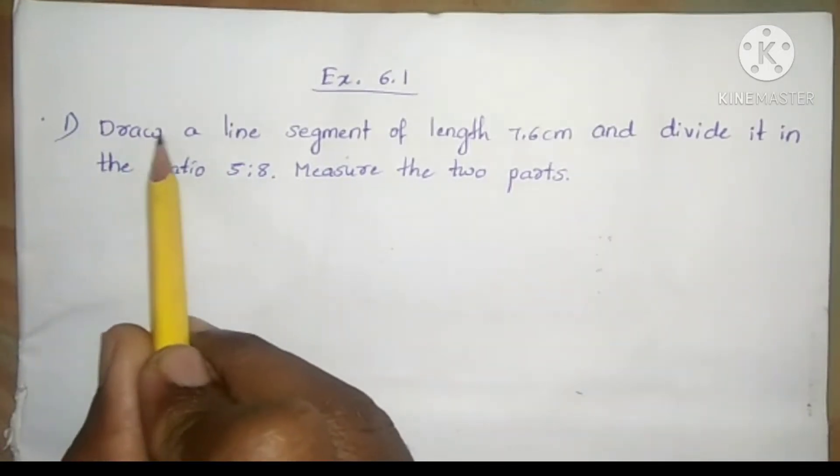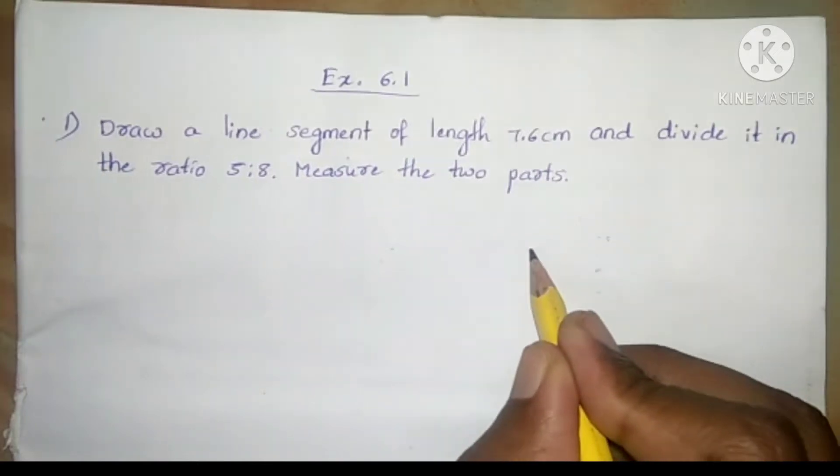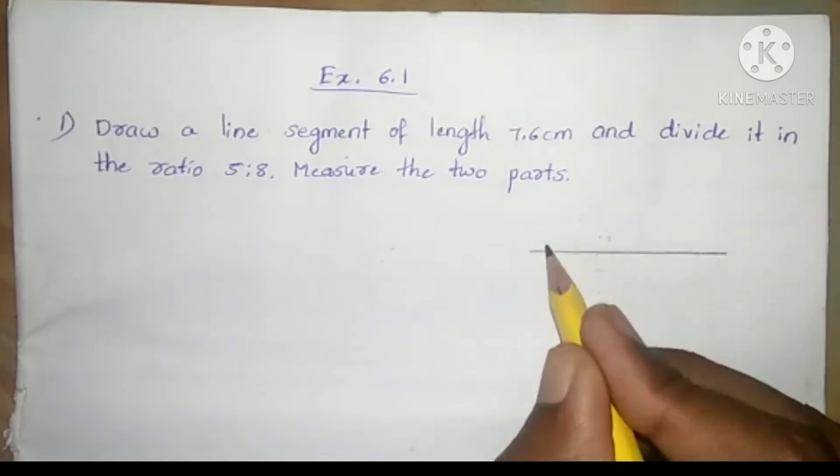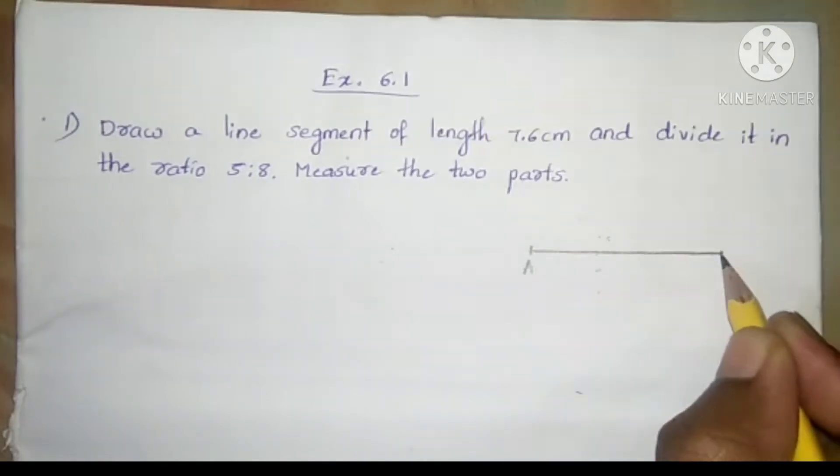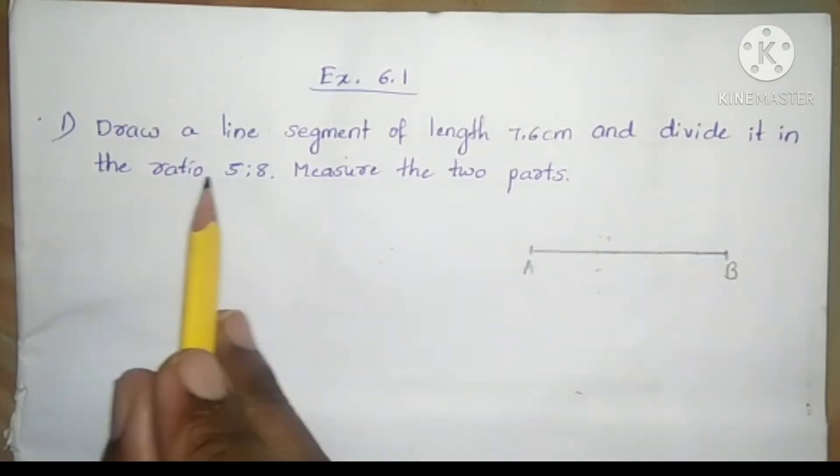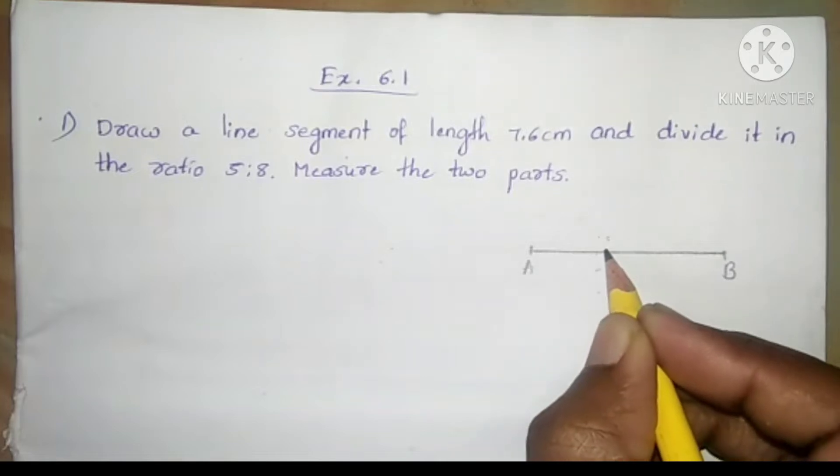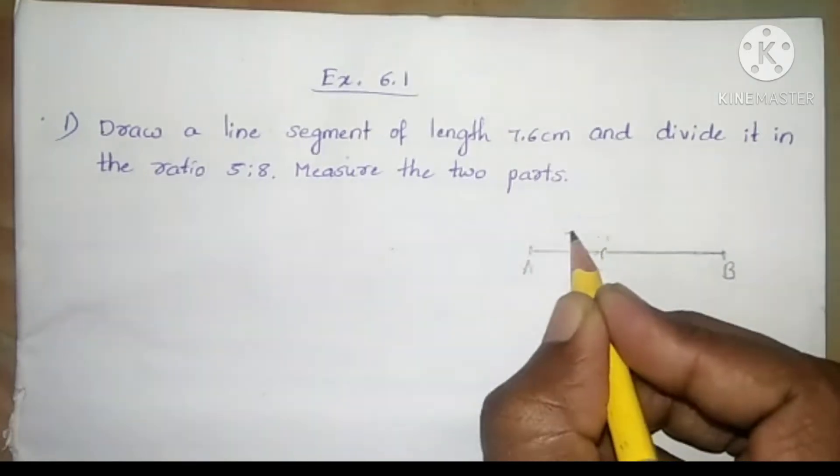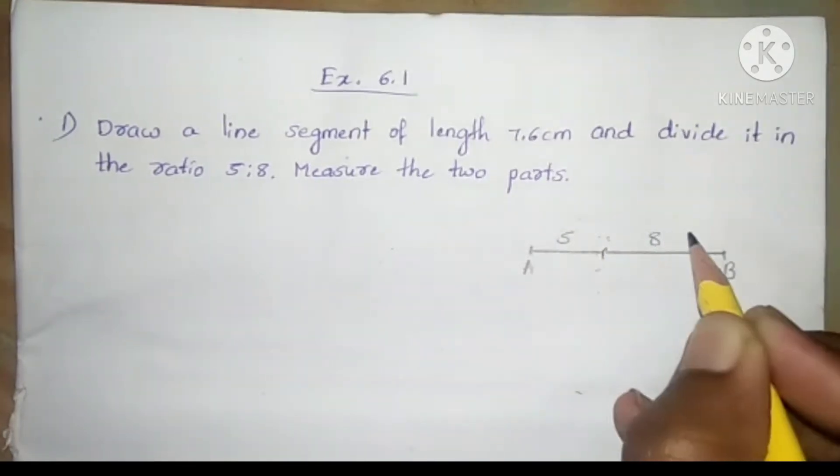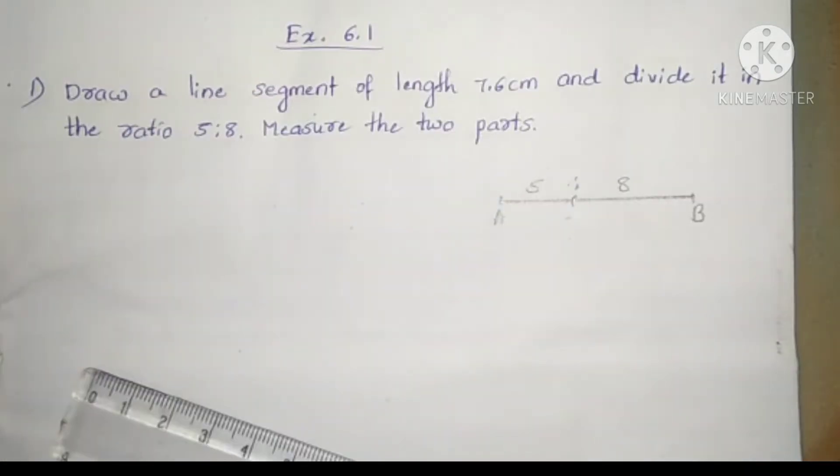First, we have to draw a line segment of length 7.6 cm. Name it as AB. Then we have to divide it in the ratio 5 to 8. We have to make two parts in this line segment. Let us start constructing.